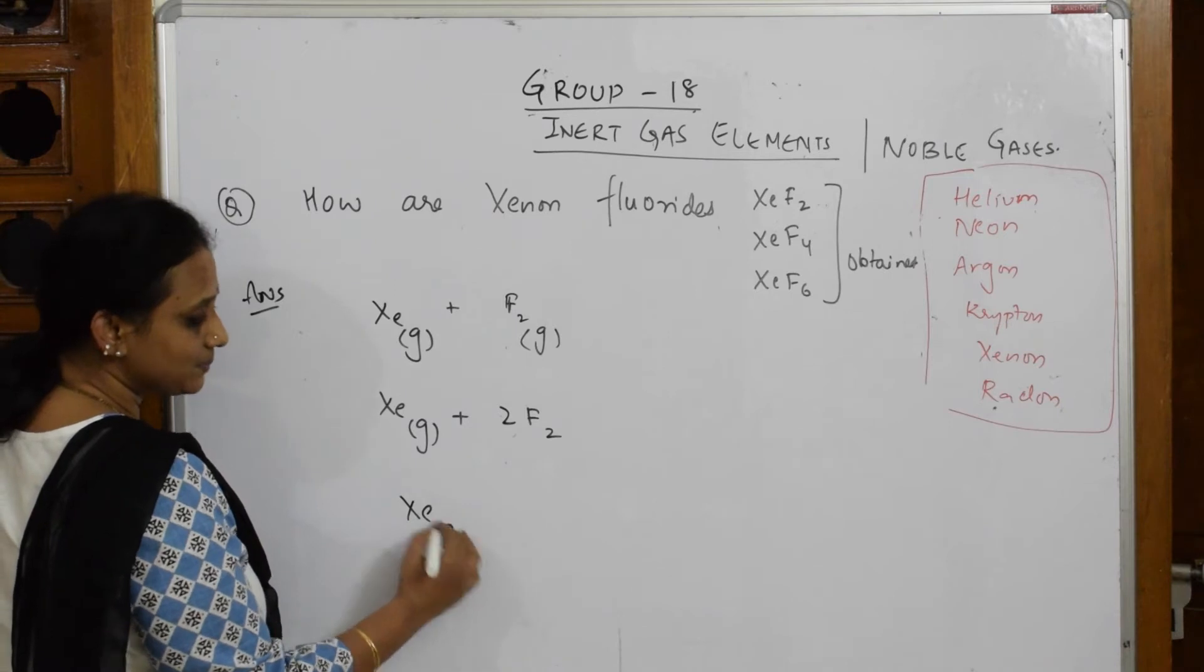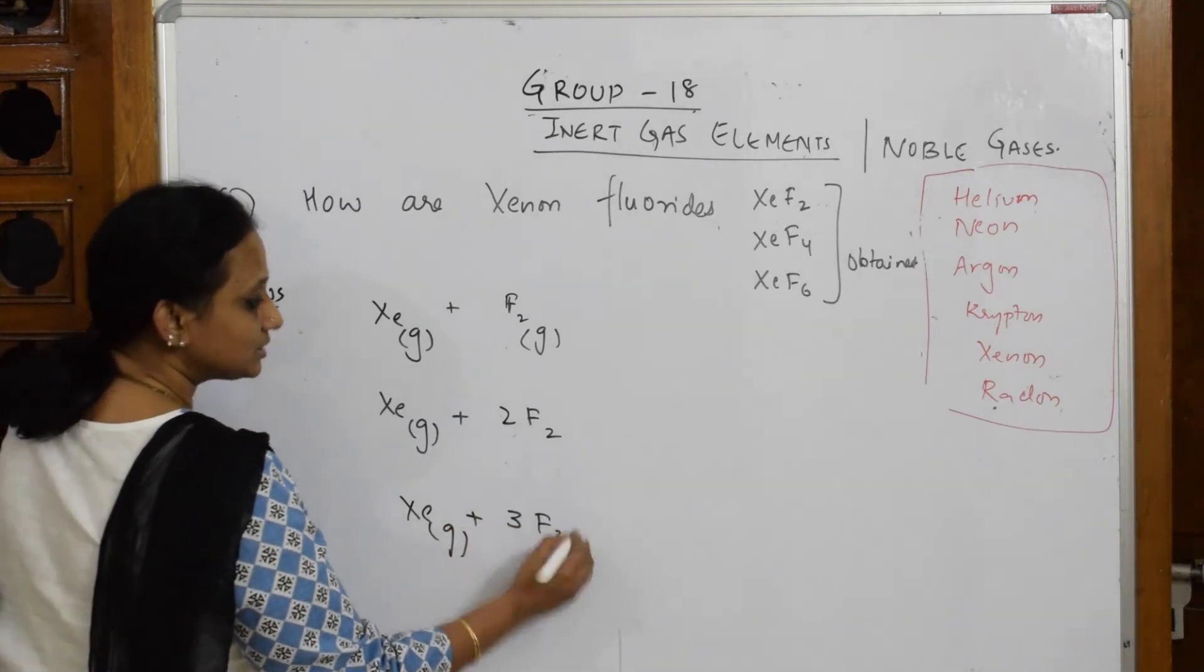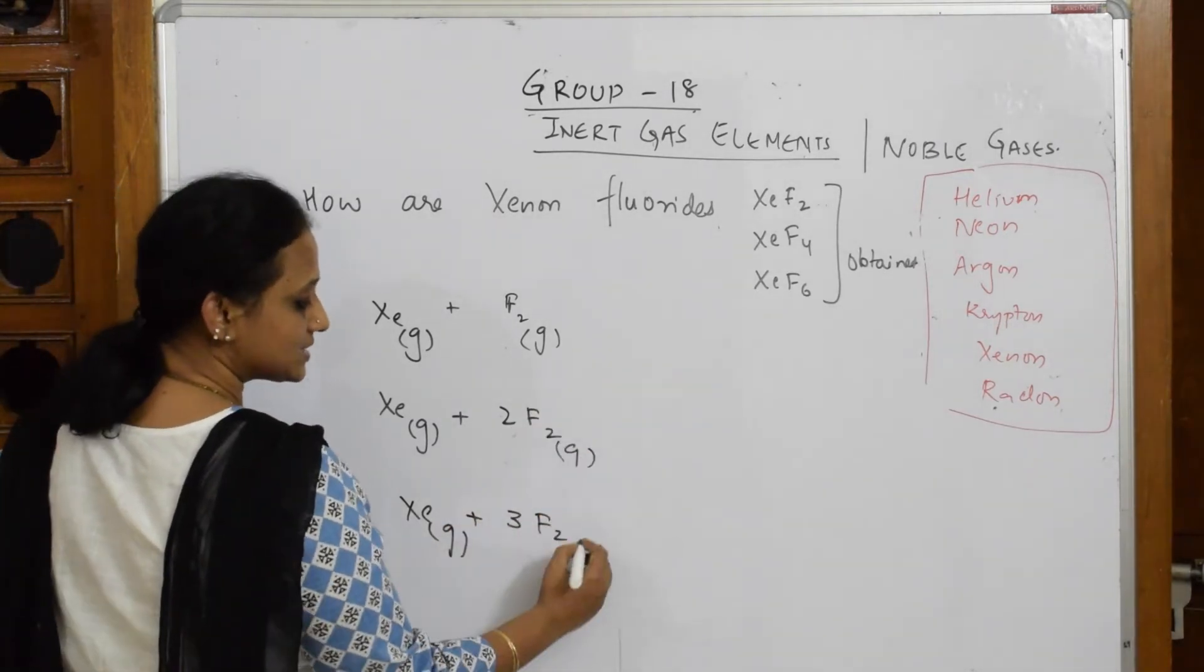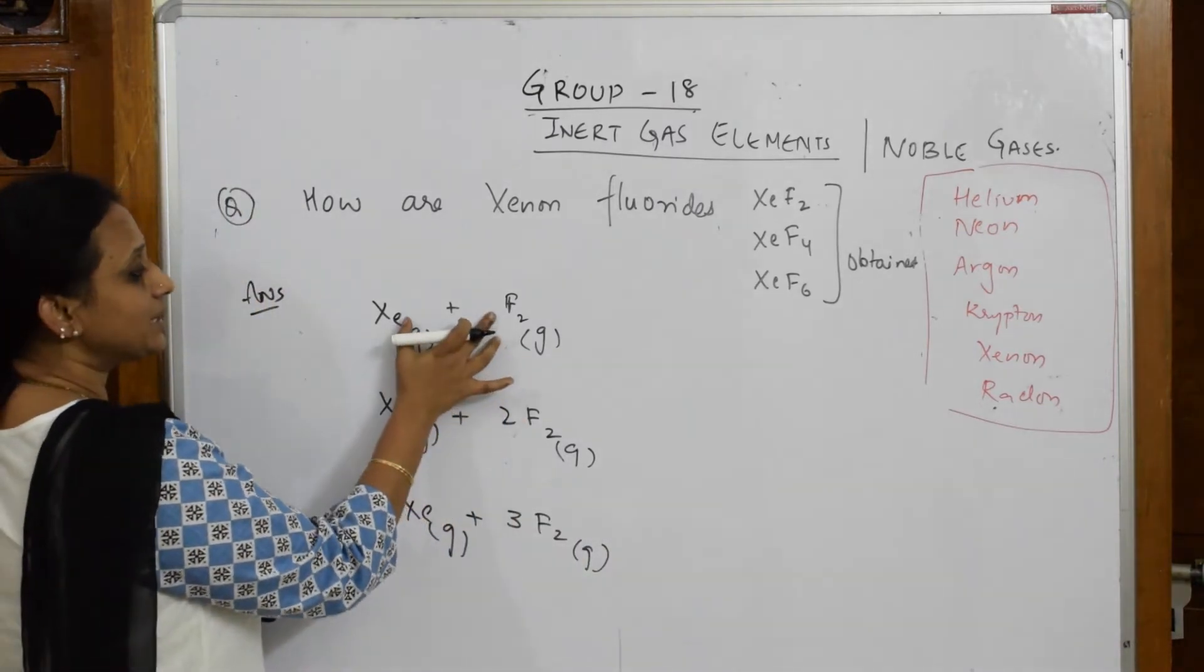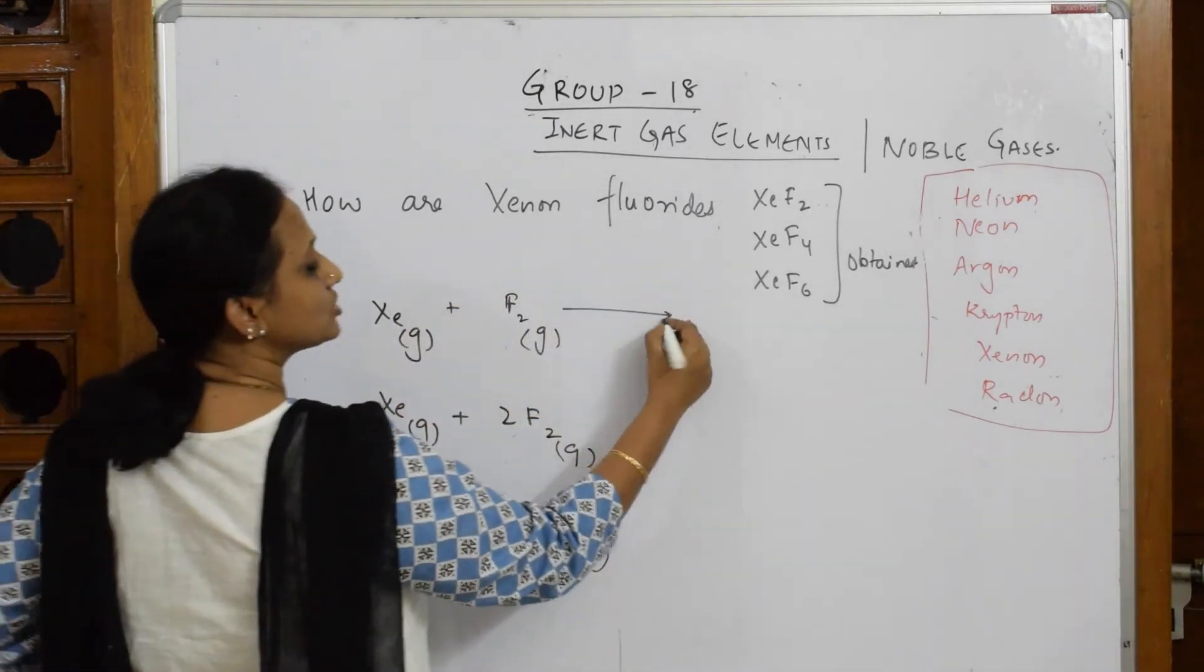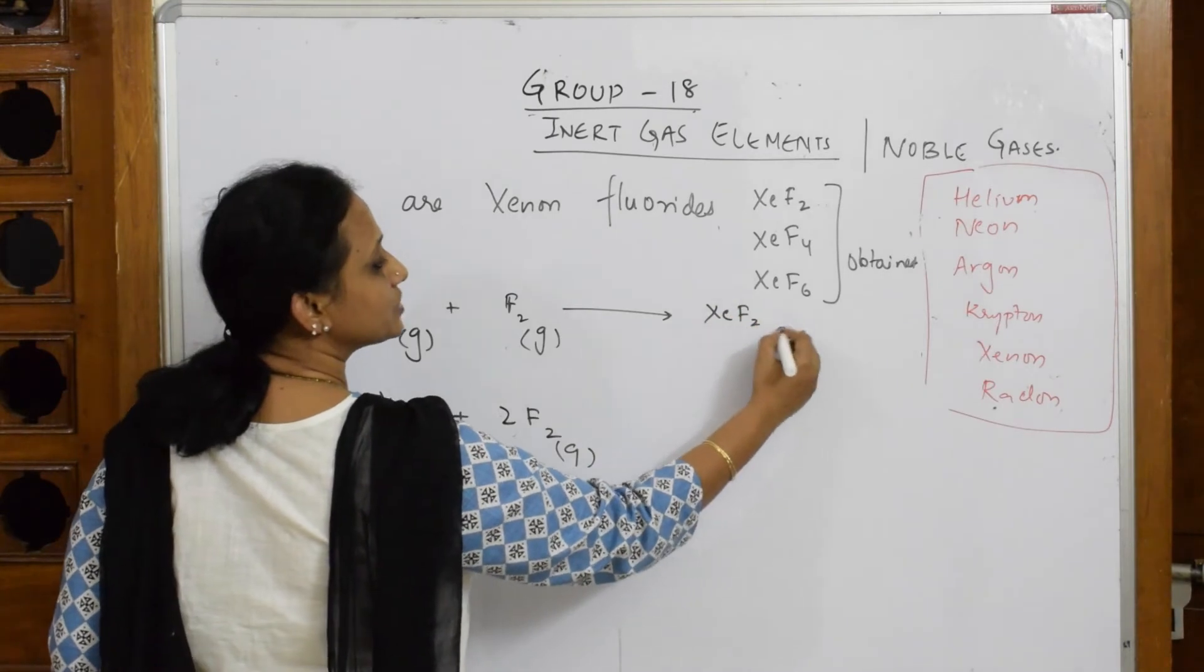The third one: Xe plus three fluorine atoms, I can prepare the third one. When I take one fluorine and combine Xe and F2, nothing big logic in this, XeF2 which is a solid.